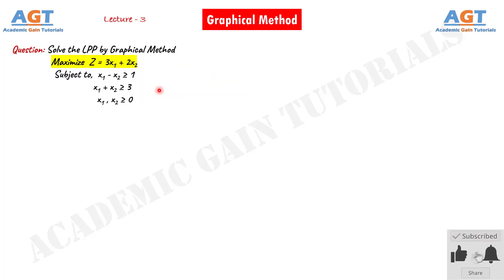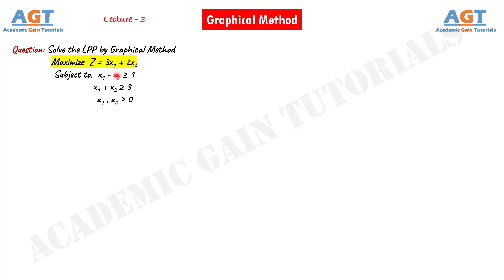After case number three, there will be one more topic — the case of no feasible solution — which we will discuss in the next lecture. In this lecture we will discuss an unbounded optimal solution for a linear programming problem by graphical method. Let's look at an example. Here we have a linear programming problem. We are asked to solve it using the graphical method.